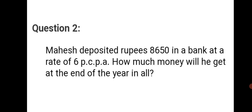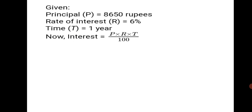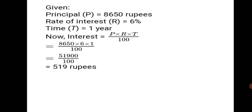Question 2: Mahesh deposited Rs. 8650 in a bank at a rate of 6 PCPA. How much money will he get at the end of the year in all? Given: P equals Rs. 8650, R equals 6%, T equals 1 year. Using the formula, Interest equals P into R into T upon 100 equals 8650 into 6 into 1 upon 100. The answer is Rs. 519.